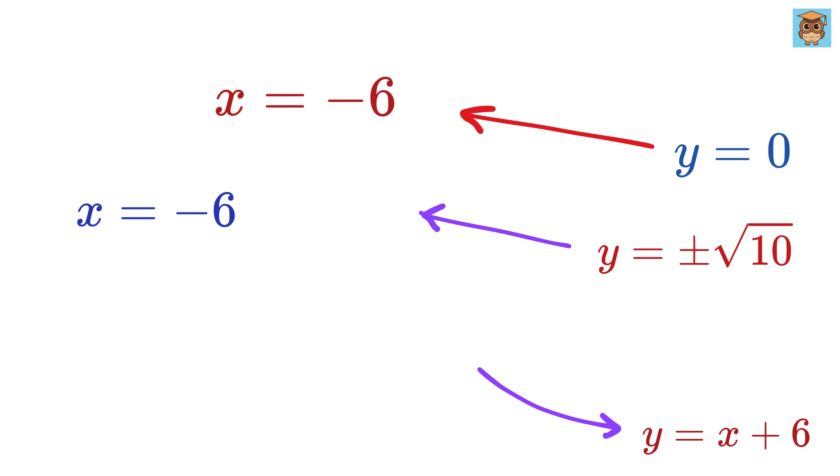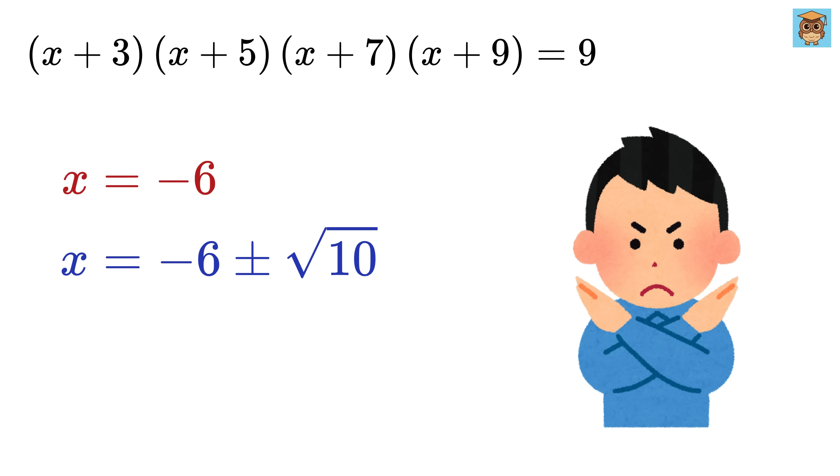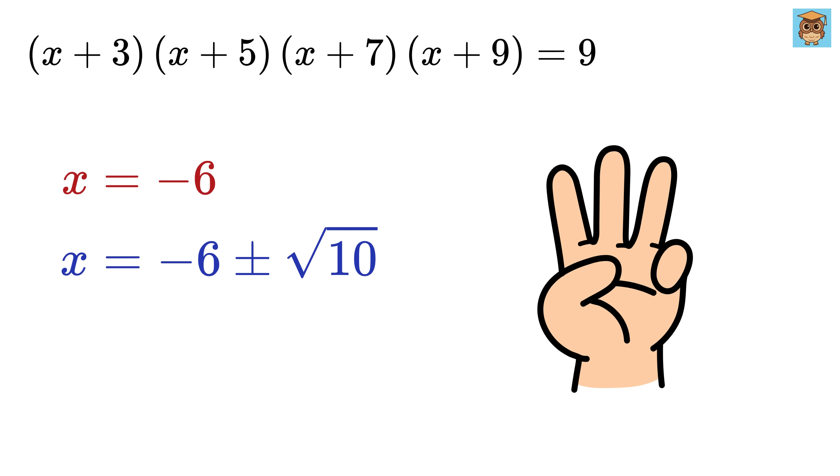And y equals plus or minus square root of 10 gives x equals minus 6 plus or minus square root of 10. And that's it! So in the end we don't actually get four solutions like we might expect from a quartic equation. We get just three.